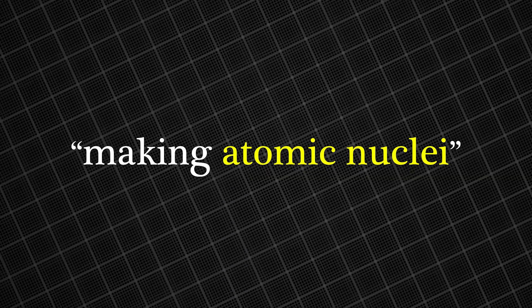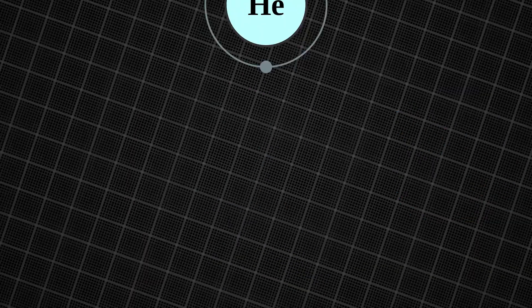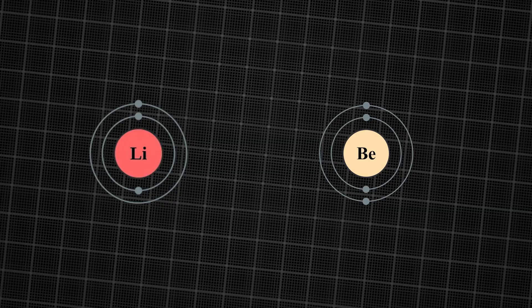Nucleosynthesis literally means making atomic nuclei, and this process created the first elements, primarily hydrogen and helium, along with some lithium and beryllium. It can occur in three different ways, and the Big Bang was the first instance of it.